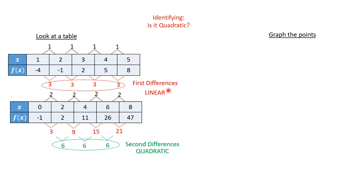The first differences tell us if it's linear — x to the first power. The second differences tell us if it's quadratic — x to the second power. The third differences tell us if it's x to the third power, which we'll see next chapter. If the 17th differences were the same, it would be x to the 17th power. The second differences being equal confirms it's quadratic.